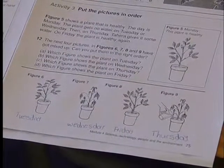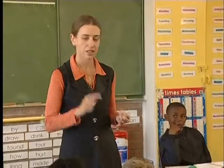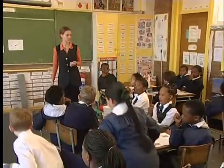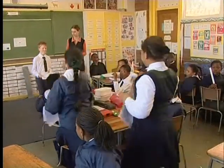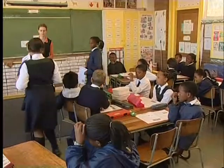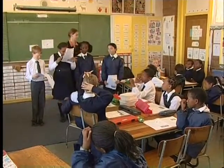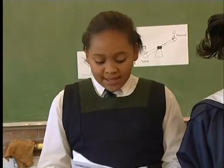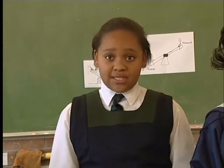Now that you've discussed your answers with your groups, we're going to have a short report back. Figure six is the plant on Tuesday because the flower is so closed. Figure seven is the plant on Wednesday because the plant hasn't got water as yet.